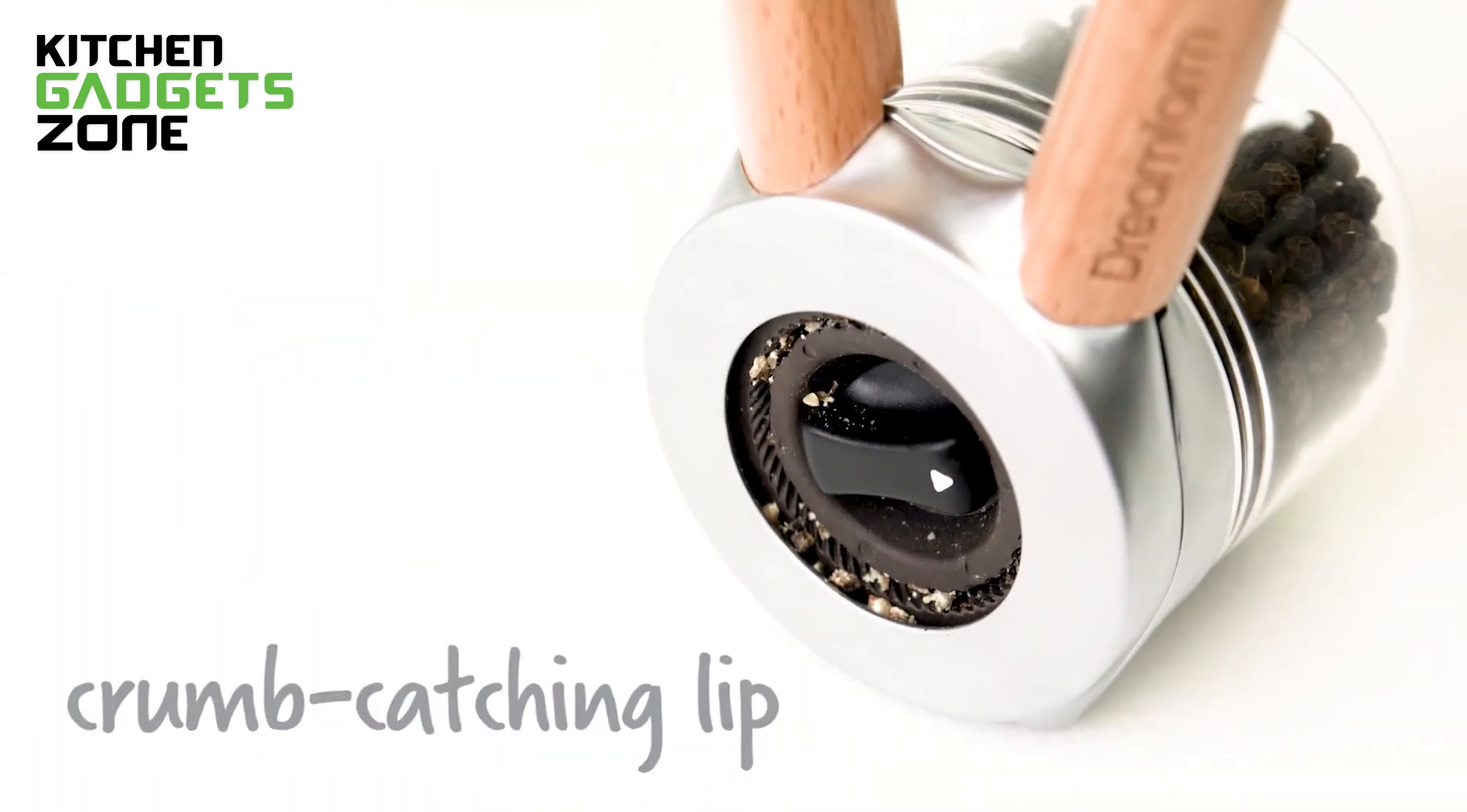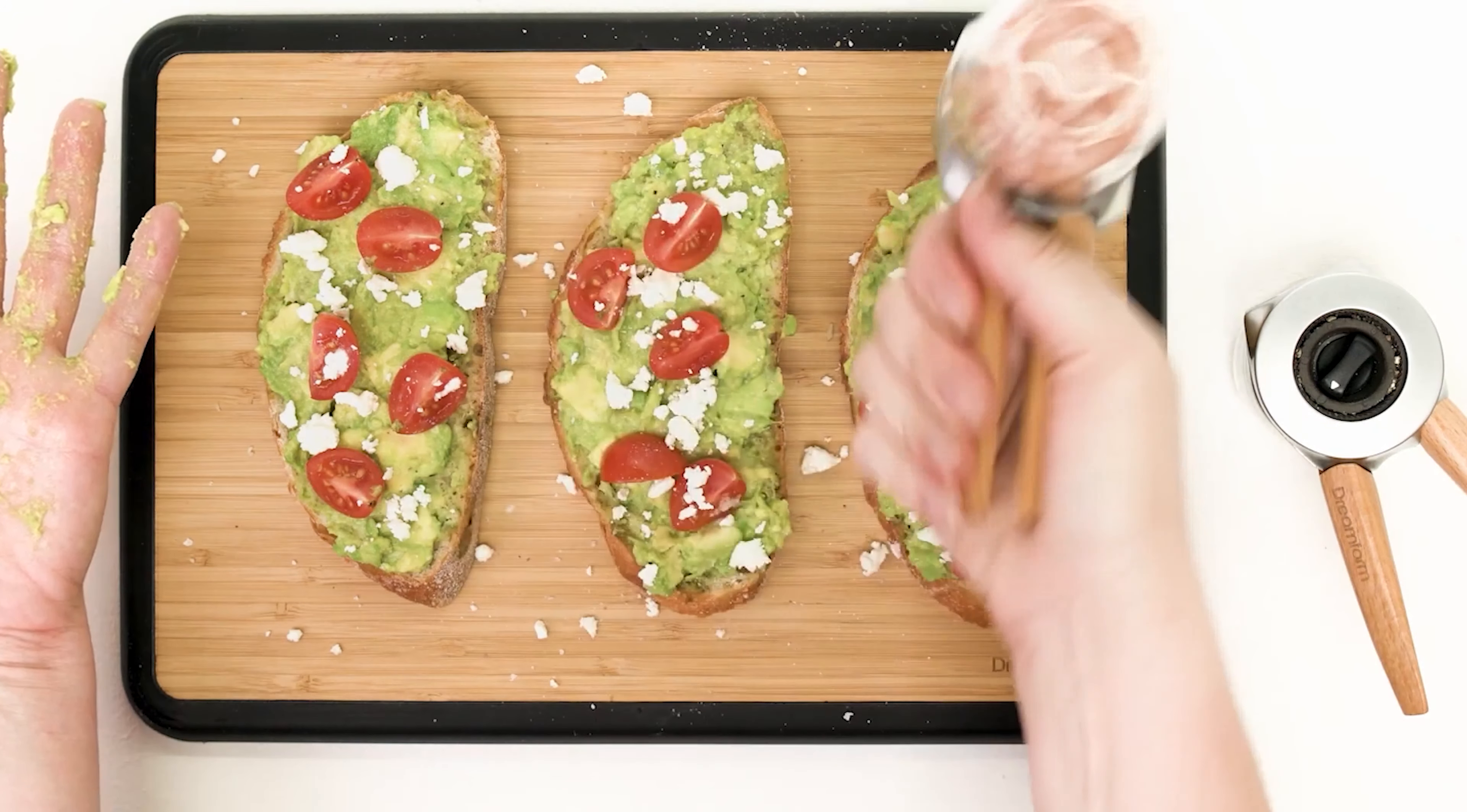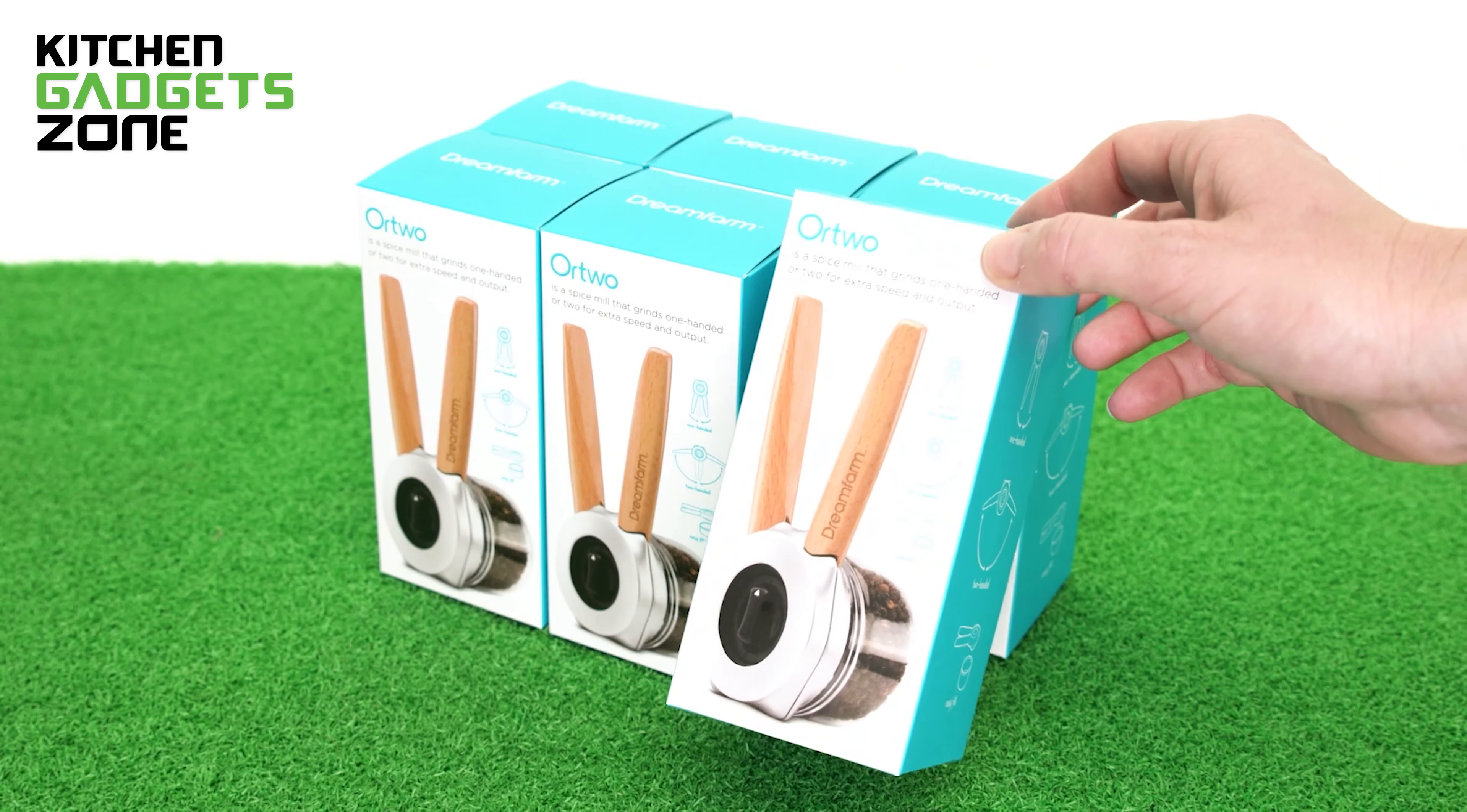The angled cylinder design with a crumb-catching lip means no more messy spills on your countertop. The clear glass spice jar makes it easy to see how much you have left, and its wide mouth opening and tempered glass construction make refilling a breeze. With Ortwu, you'll never have to settle for dull, lifeless flavors again.